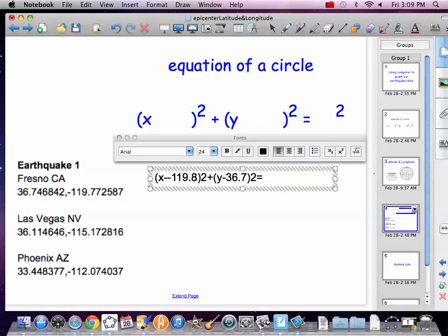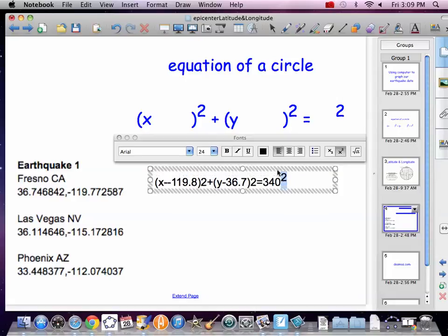Now, what's the radius? Well, we found this out before. That was how far away from the center did we feel an earthquake, and that's the data you already got from that distance time chart. For Fresno, it was 340 squared. So now we've got to actually put these up as superscripts.